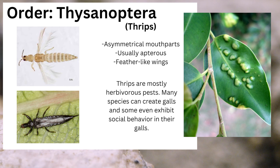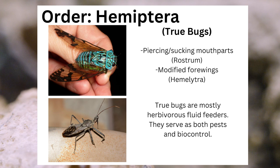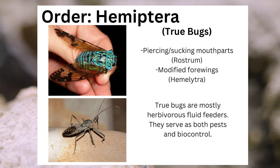The word bug can be applied to many different types of creatures, insects and not, but true bugs are the members of the order Hemiptera. These can be identified through their piercing-sucking mouthparts known as rostrums, and their modified forewings known as hemelytra. True bugs are mostly herbivorous fluid feeders and serve as both pests and biocontrol.